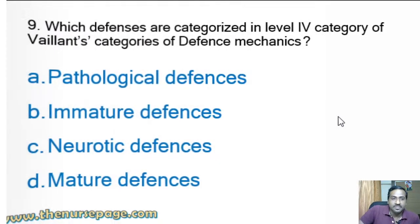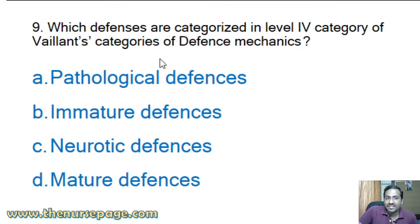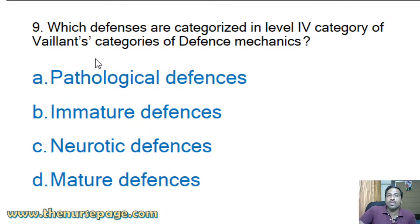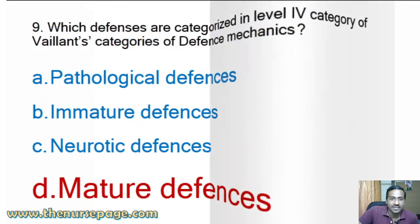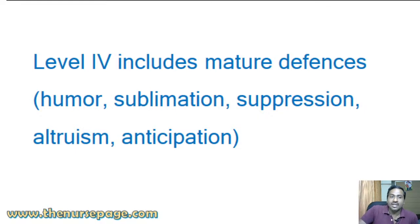Next question: 'Which defenses are categorized in level four of Weyland's categorization of defense mechanisms?' Options: pathological defenses, immature defenses, neurotic defenses, mature defenses. The answer is mature defenses. Level four includes mature defenses like humor, sublimation, suppression, altruism, and anticipation.